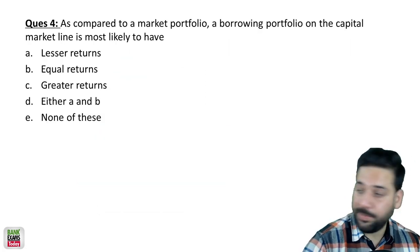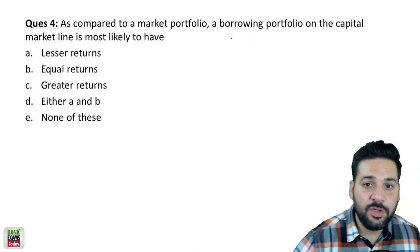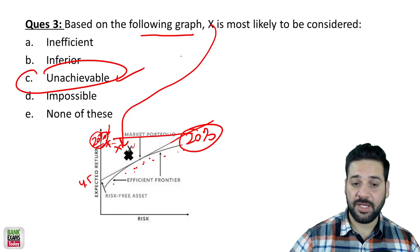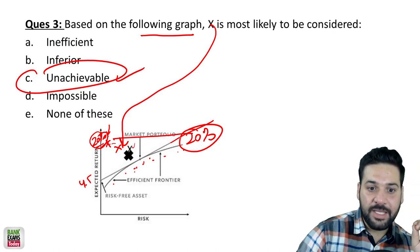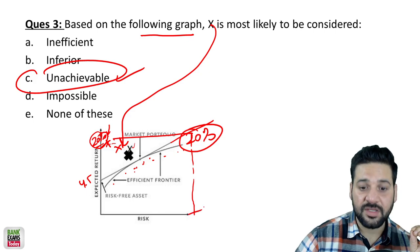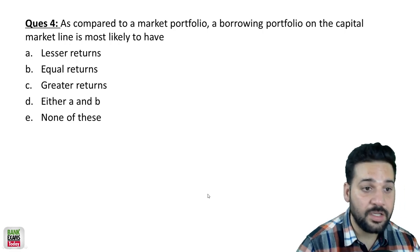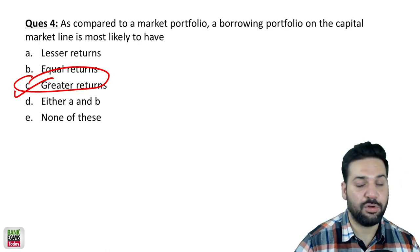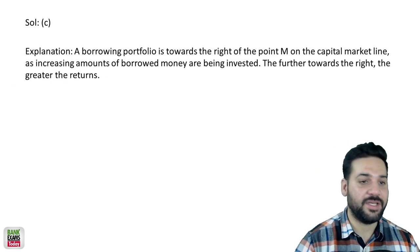Question number four: compared to the market portfolio, a borrowing portfolio on the capital line — you borrowed money from the market. Now with the borrowed money you are taking more risk; the risk is growing. But obviously you can make more money. So instead of investing 10 lakhs, you are investing 1 crore — the rest is borrowed money — for greater returns.